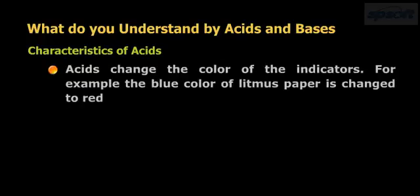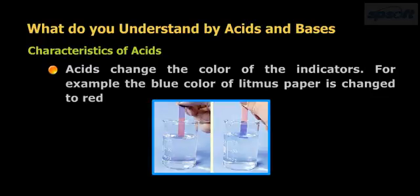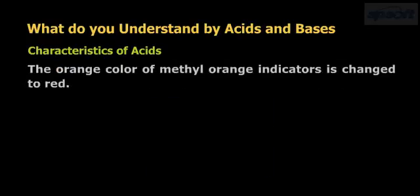Characteristics of acids: Acids change the color of indicators. For example, the blue color of litmus paper is changed to red. The orange color of methyl orange indicator is changed to red.